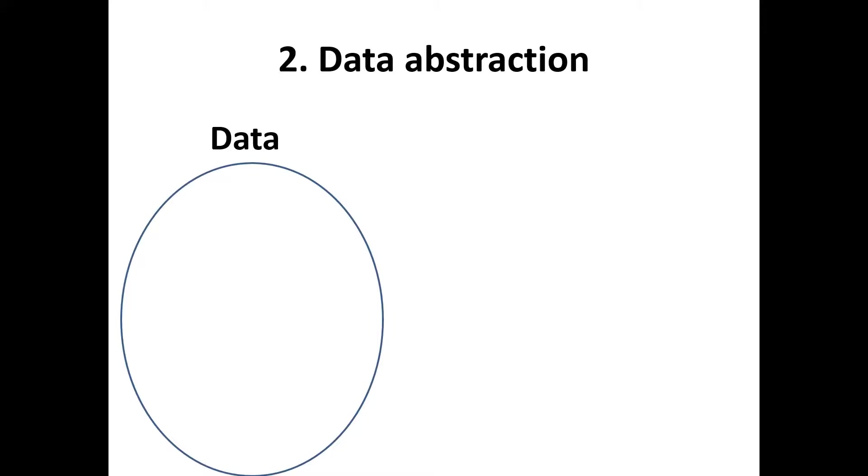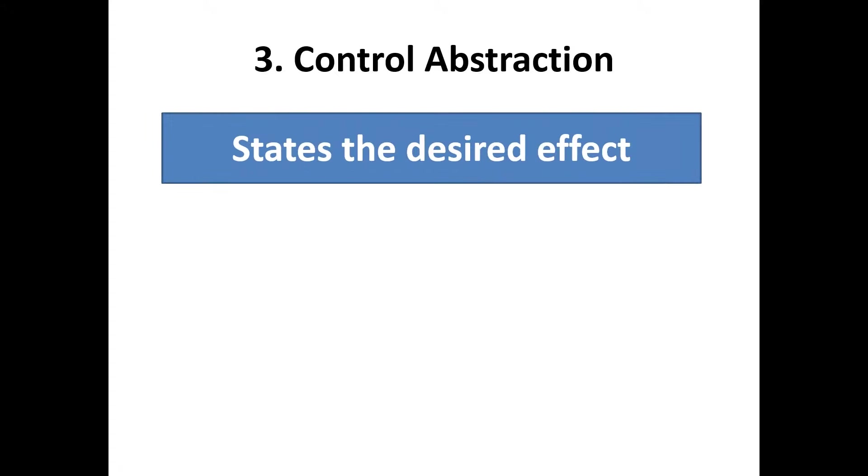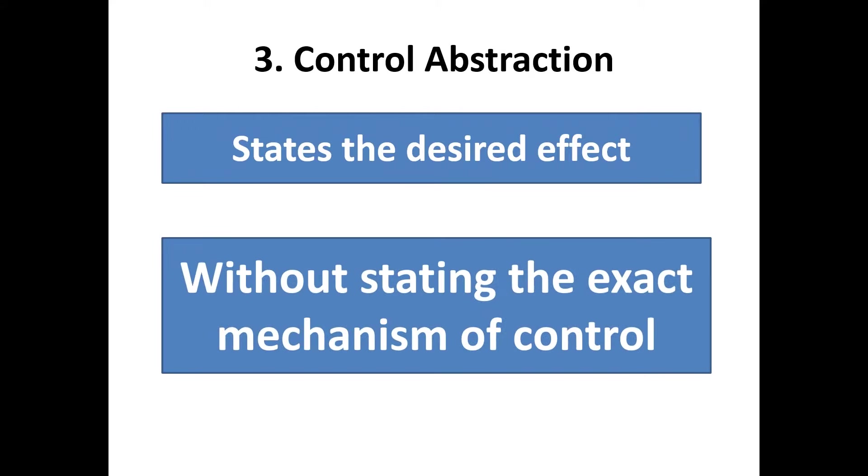This involves specifying data that describes a data object. Number three, control abstraction. This states the desired effect without stating the exact mechanism of control.